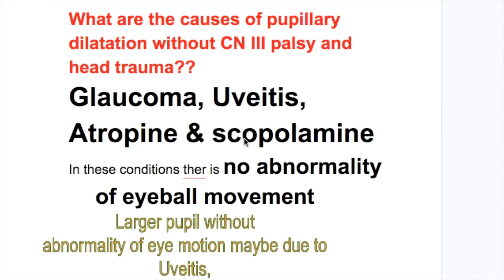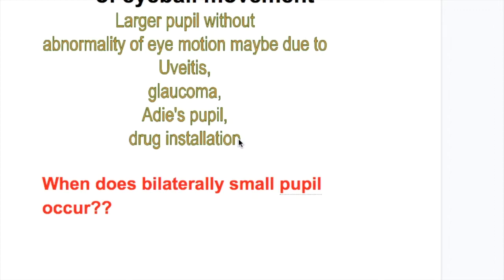Causes of pupillary dilatation without cranial nerve 3 palsy and head trauma include glaucoma, uveitis, and after instillation of atropine or scopolamine, which dilates the pupil. In these conditions, the pupil will be dilated without abnormalities of eye movement — a large pupil without eye movement abnormalities occurs in glaucoma, uveitis, and drug-instilled pupils.